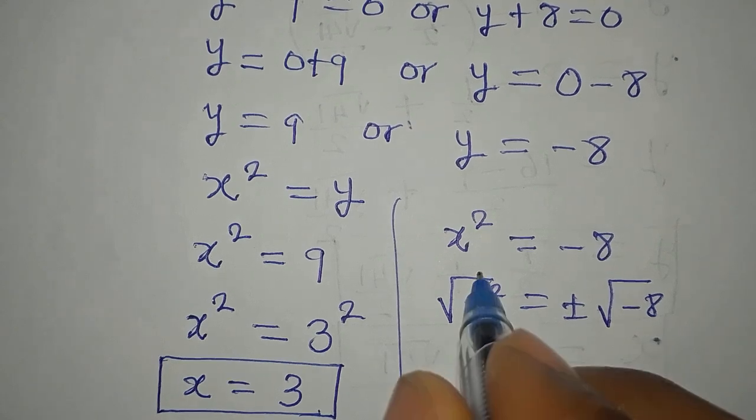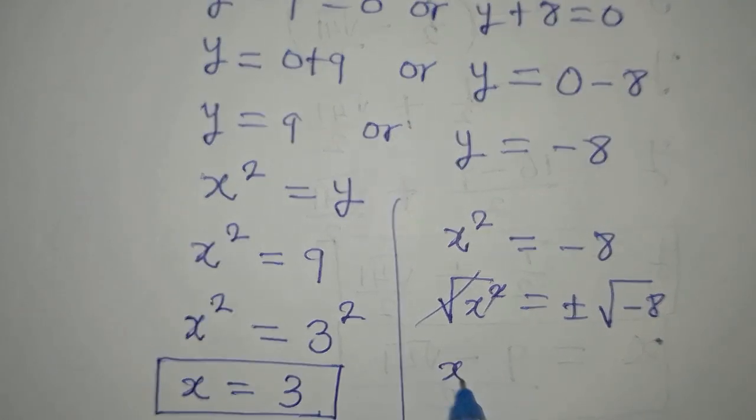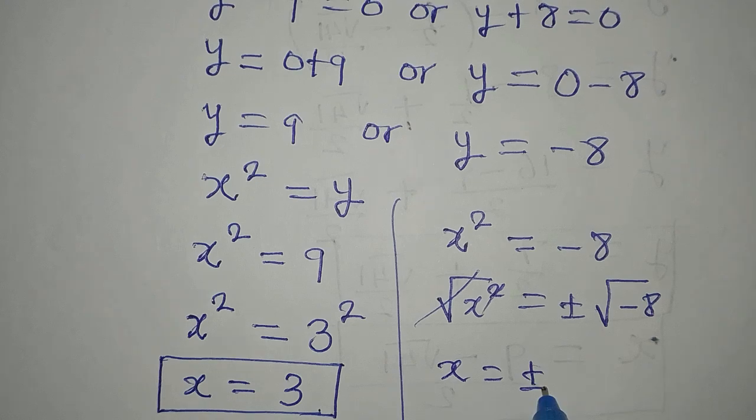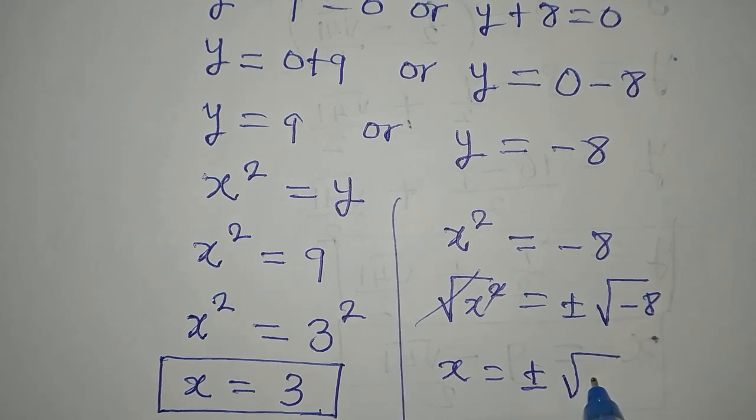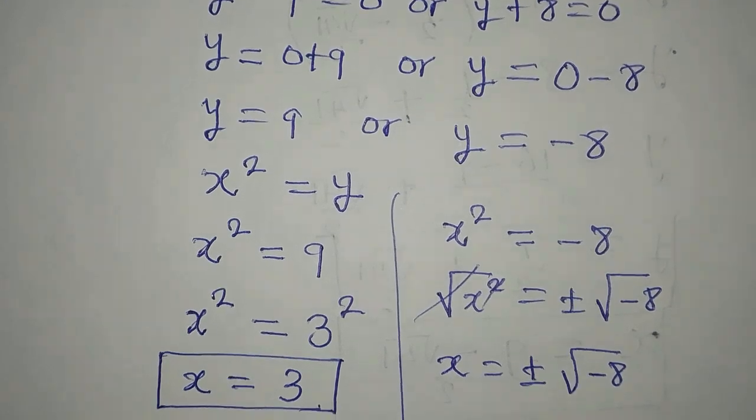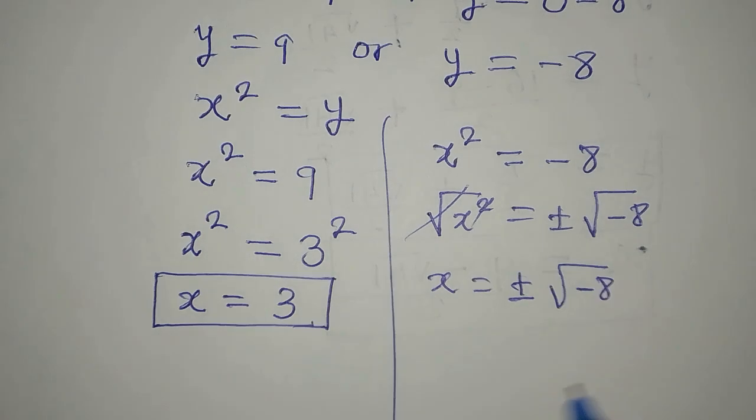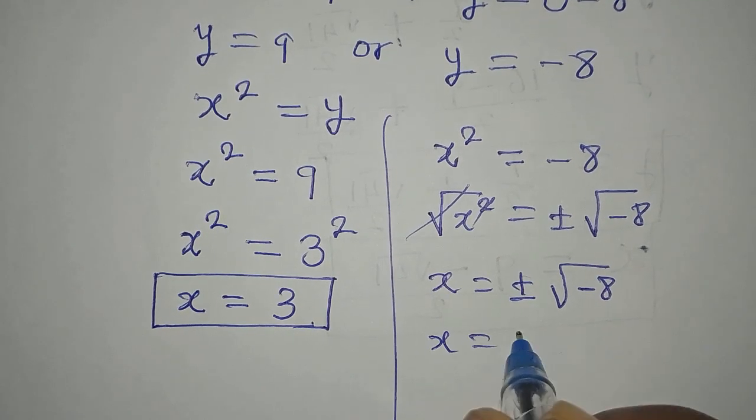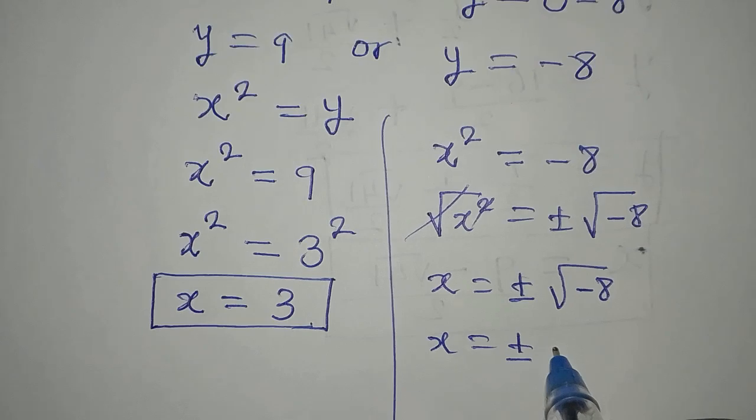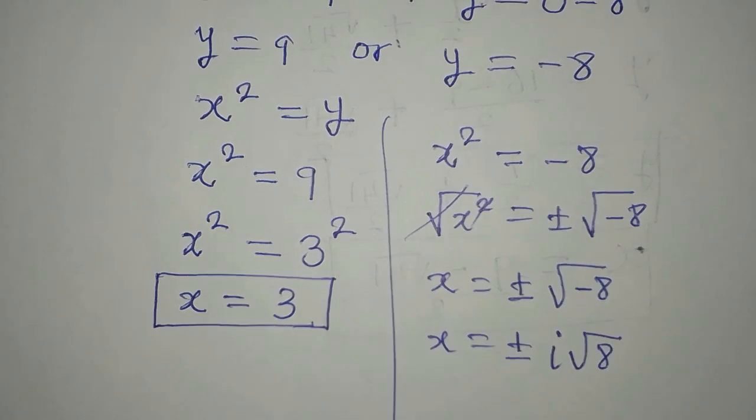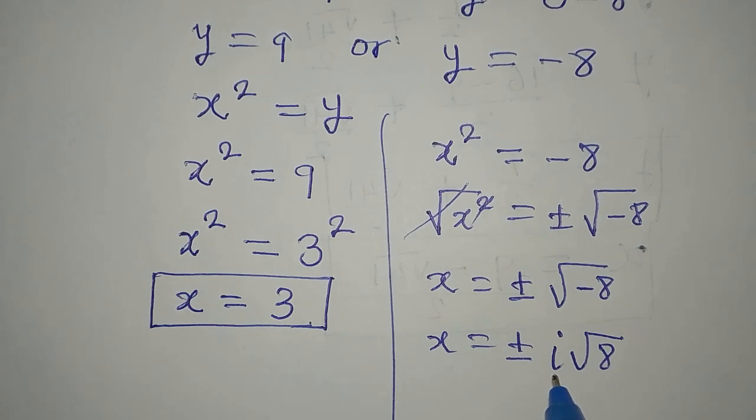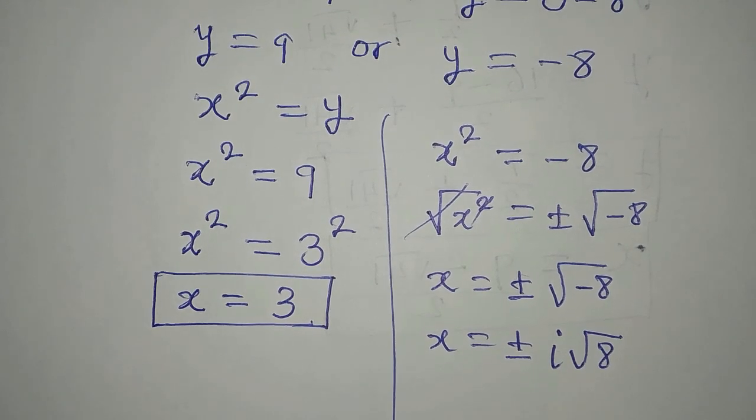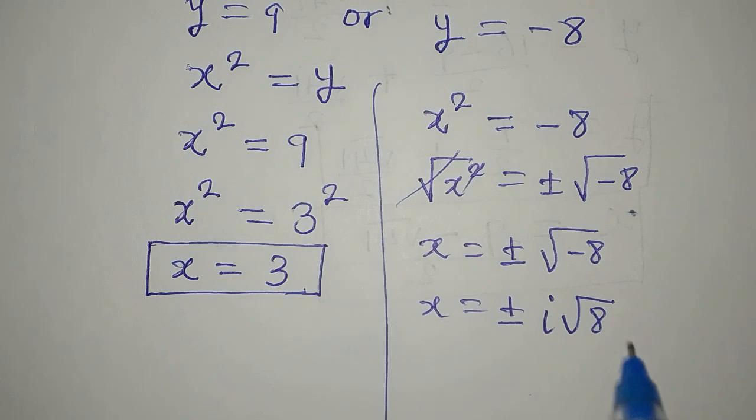So x is now plus or minus square root of negative 8. But if you find the square root of negative 8, it is the same thing as i square root of 8. Right? And this i now means that we are having a complex solution and it is imaginary.